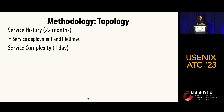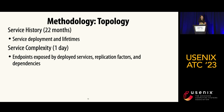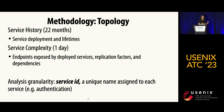The next table we looked at is on service complexity, using one day of data. It contains endpoints exposed by deployed services, replication factors, and dependencies between services. Our analysis granularity for this entire study is on the granularity of a service ID or service name — a unique name assigned to each service, like 'authentication'.